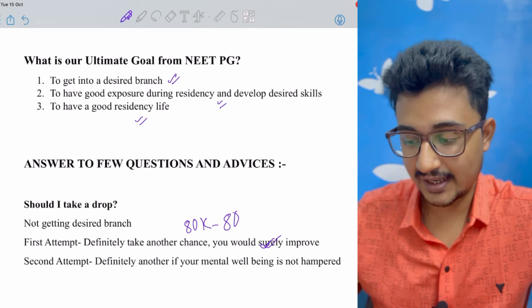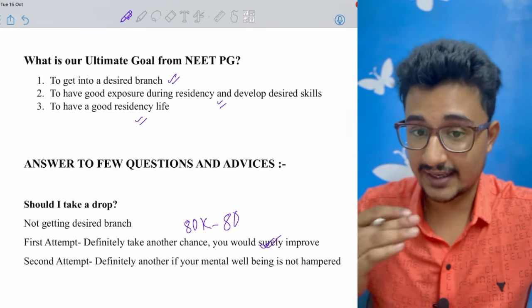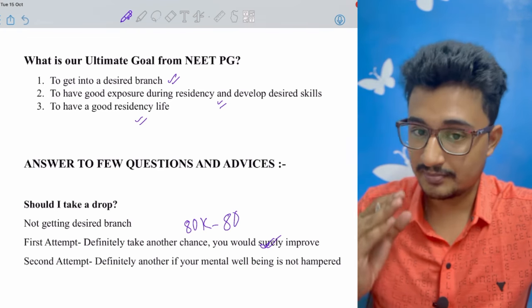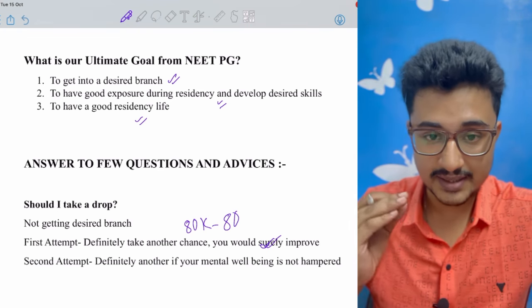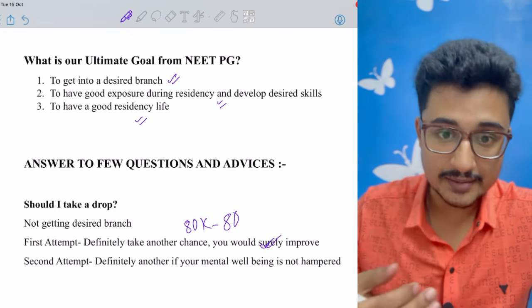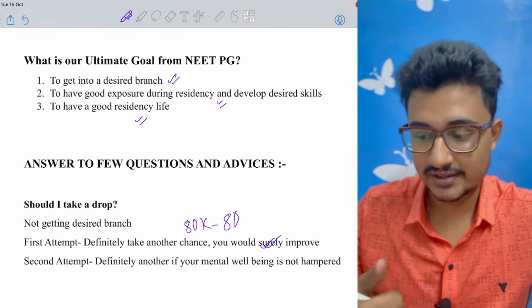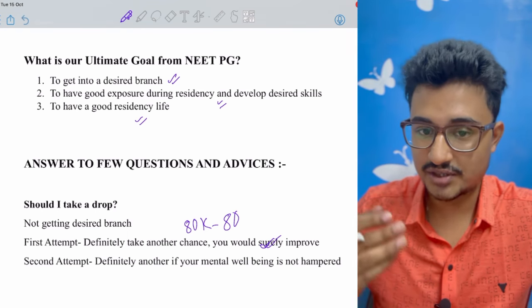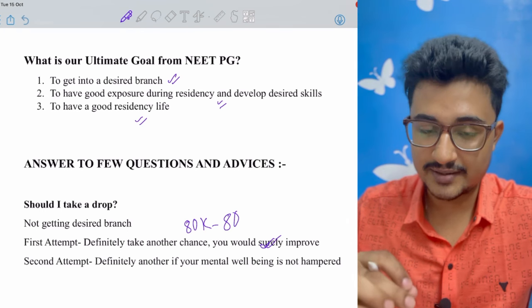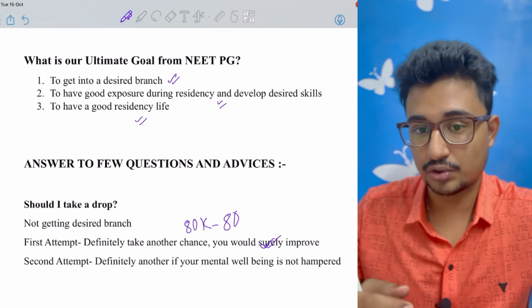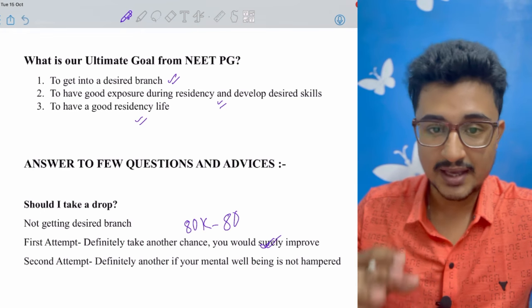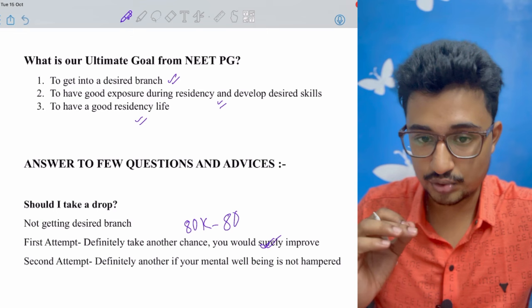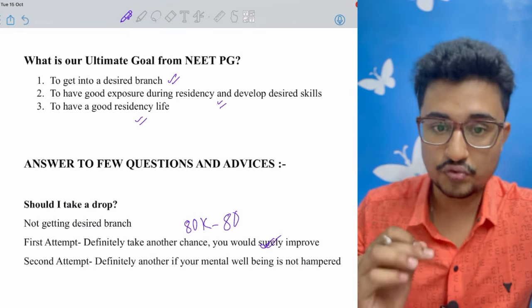If it is your second attempt, then also if you give another drop there is good scope of improvement. But you have to keep very much mentally stable and mentally stubborn because if you are not that much mentally strong enough to tackle another drop, then I would suggest you take a good branch in this attempt only. For mid-rankers also there are good clinical branches like radiation oncology which is a growing branch, anesthesiology, and you can do DM critical care. These are also good branches if you don't have that much mental stamina, then go for a seat.